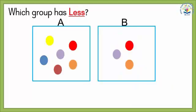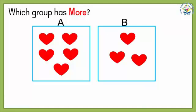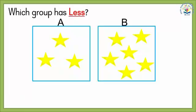Which group has less? Yes, Group B. Very good. Which group has more hearts? Group A. Very good. Which group has less stars? Group A.